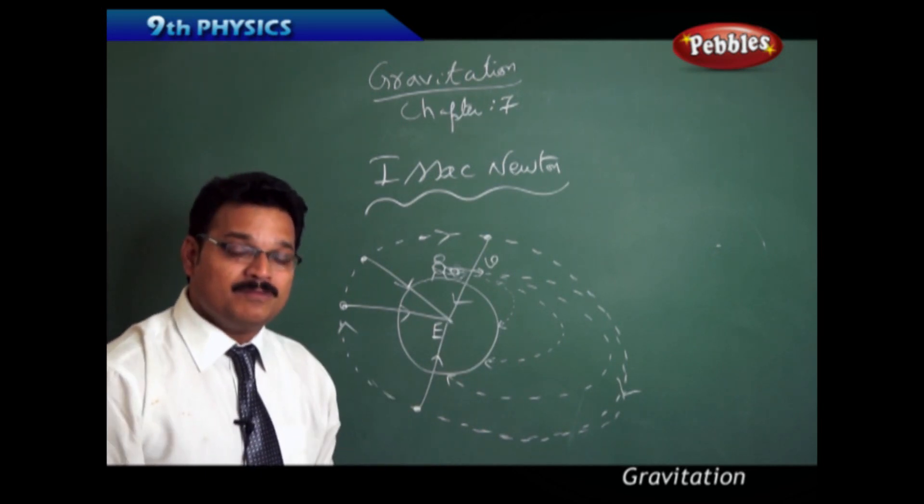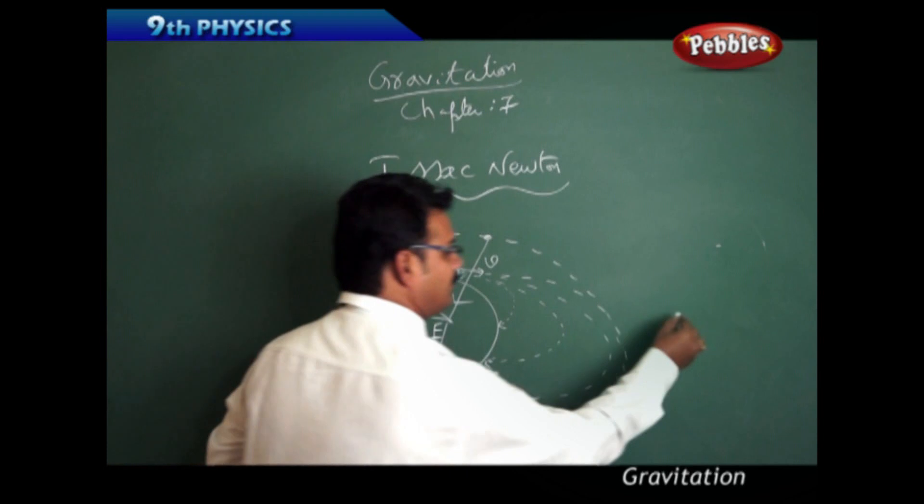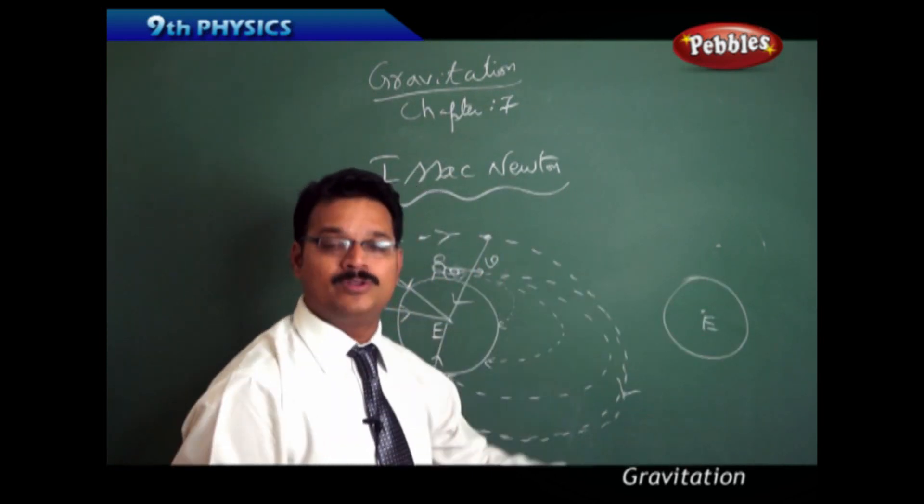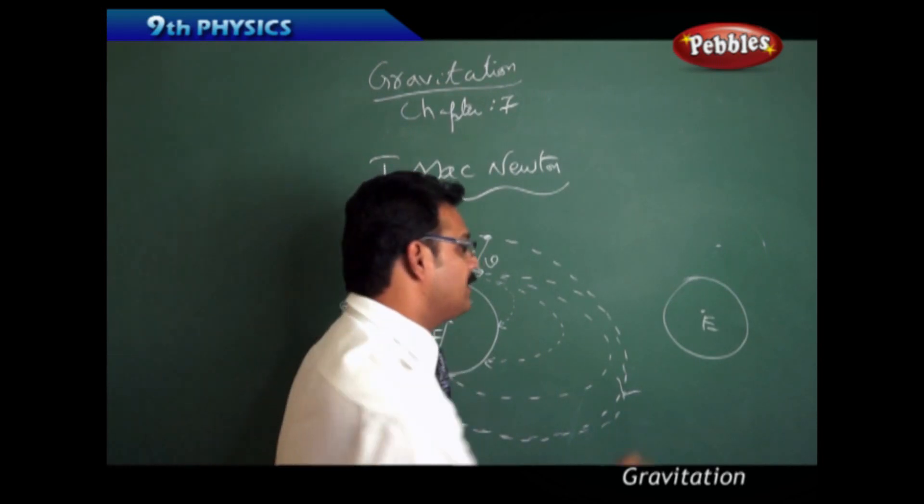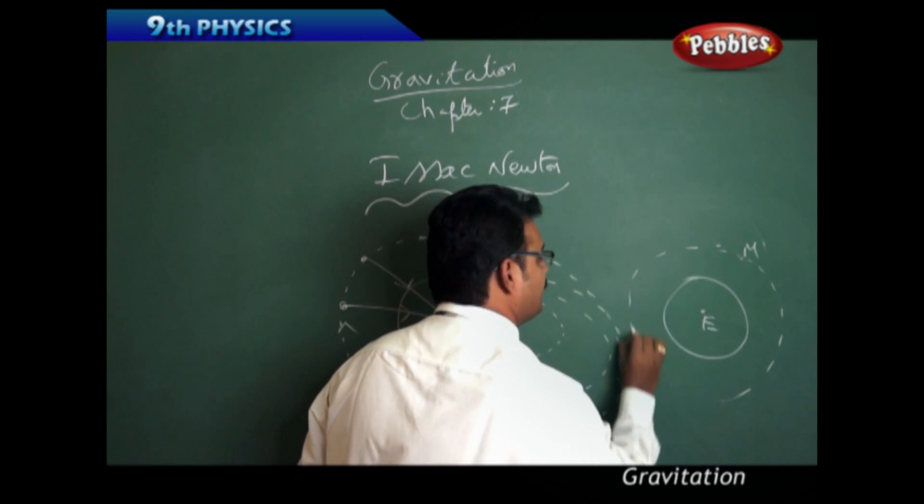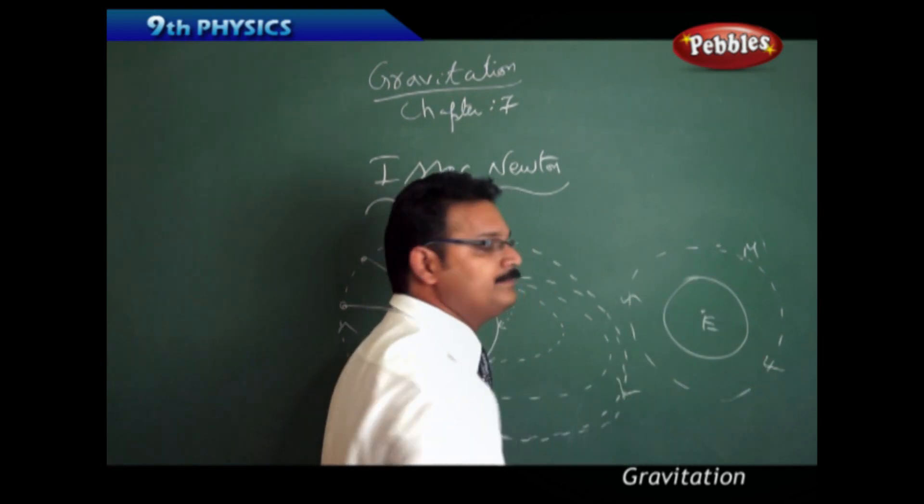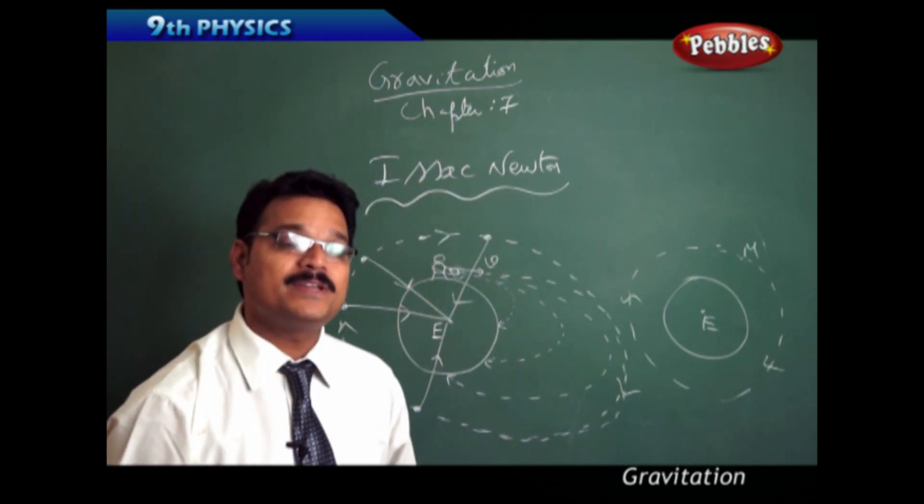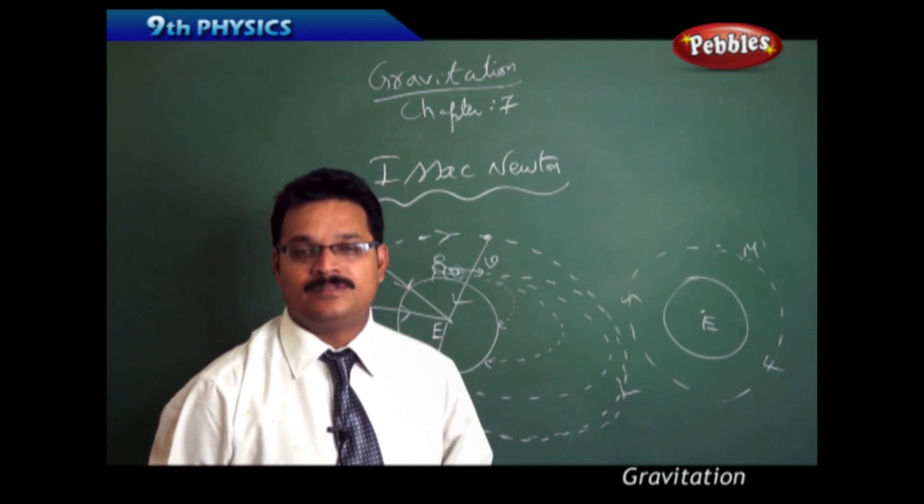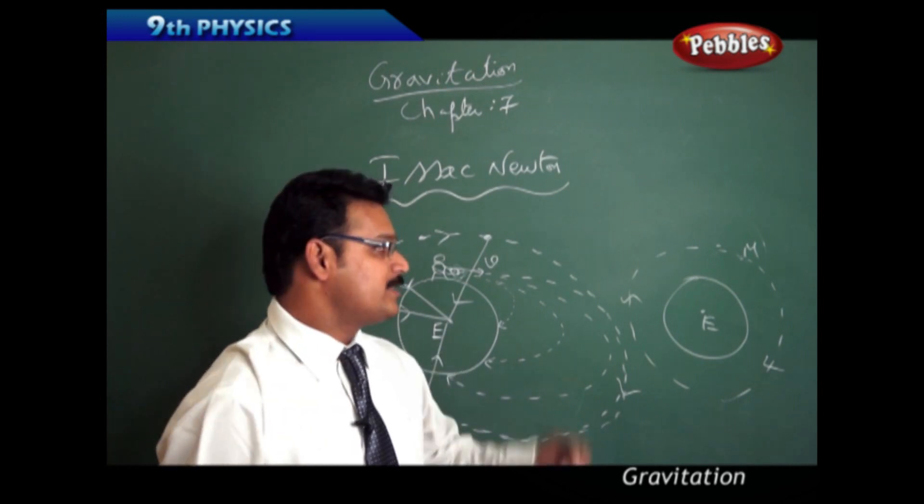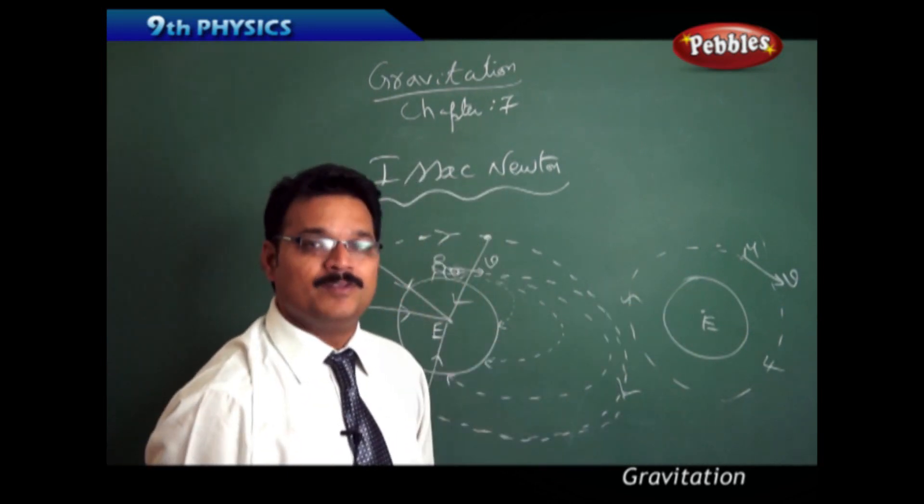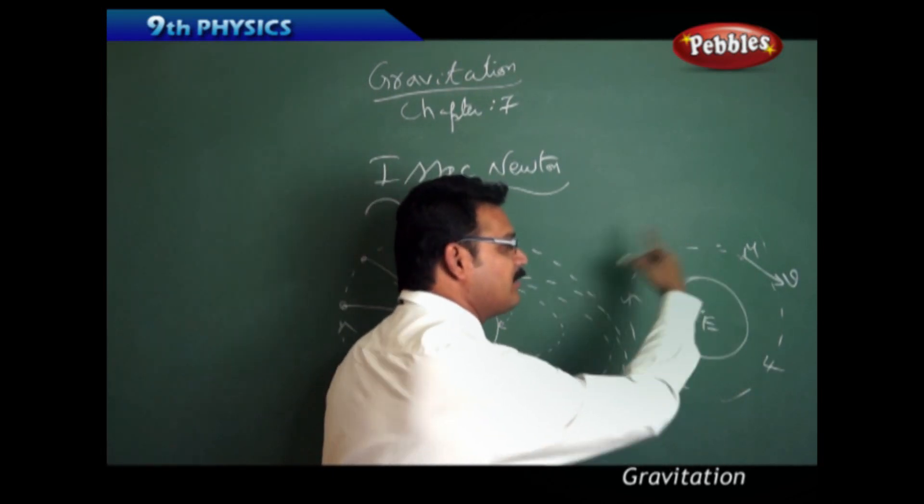And this is the reason why the moon is rotating around the earth. Isaac Newton told that maybe one person threw the moon in the space, such that the moon has to rotate around the earth in a circular path. Who threw the moon in the space? Isaac Newton told that those persons are nothing but angels, servants of gods. Those angels threw the moon with a particular speed, a particular velocity, with which the moon keeps on rotating around the earth.